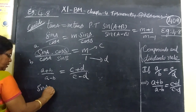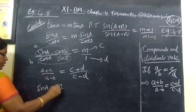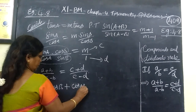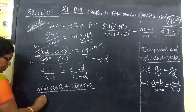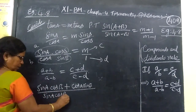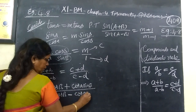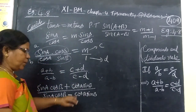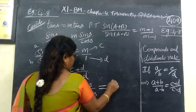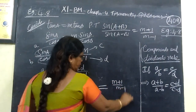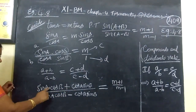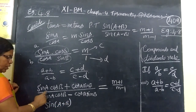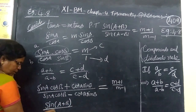Sin a cos b plus cos a sin b, by sin a cos b minus cos a sin b. Adding in the numerator and separating in the denominator. This is nothing but the formula: sin(a+b) equals sin a cos b plus cos a sin b, and sin(a-b) equals sin a cos b minus cos a sin b.